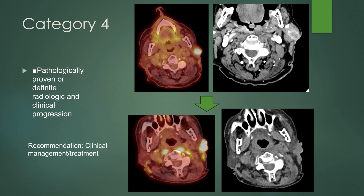Category 4 is pathologically proven or definite radiologic and clinical progression. In this case, you do clinical management and treatment with or without biopsy. This patient had a parotid neoplasm — irregular, peripherally enhancing with cystic change in the center on the original CT. After treatment, follow-up PET showed it now extending through the skin, with a more exophytic appearance, definitely increased in size and uptake. This patient will proceed to a different treatment — definite clinical and radiologic progression.